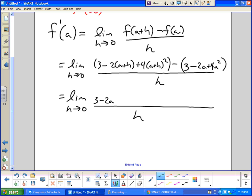I get 3 minus 2a minus 2h. I see this as a squared plus 2ah plus h squared. So I'm going to distribute that and get plus 4a squared plus 8ah plus 4h squared. And then I'm going to distribute the negative. Minus 3 plus 2a minus 4a squared.